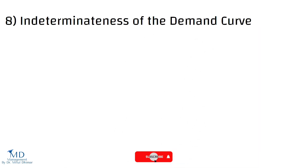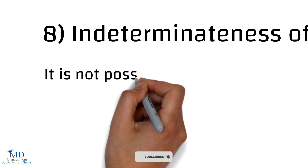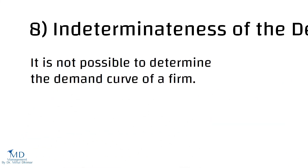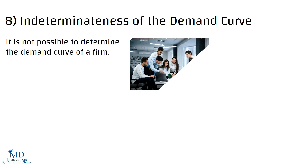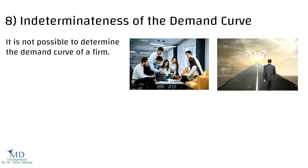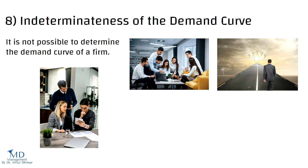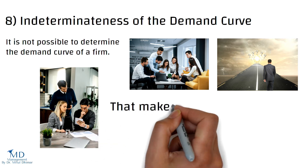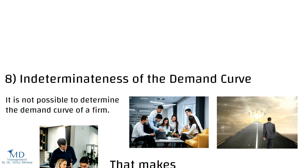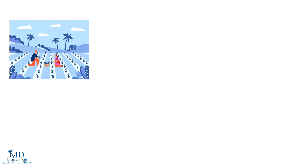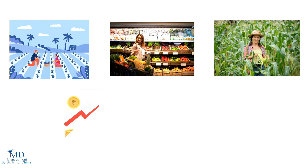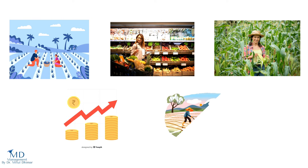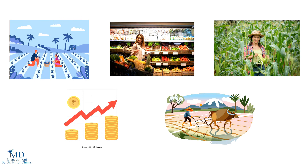Eighth, indeterminateness of the demand curve. Unlike other market structures, under oligopoly it is not possible to determine the demand curve of a firm. This is because there is huge interdependence among rivals and uncertainty regarding their reactions. Rivals can react in different ways when a firm changes its price, making the demand curve indeterminate. For example, if Mary and Raj are the only two growers supplying organically grown corn to a local grocery store, they know that cooperating and producing less corn could raise the price, but working independently makes it difficult to determine the demand of individual growers.